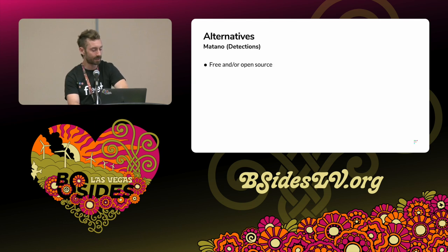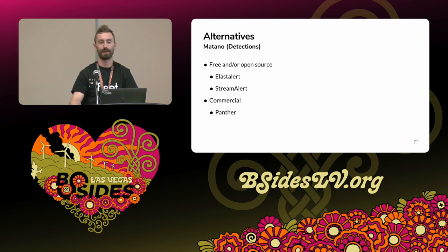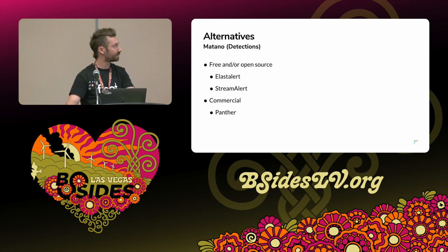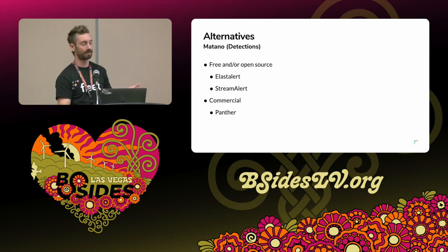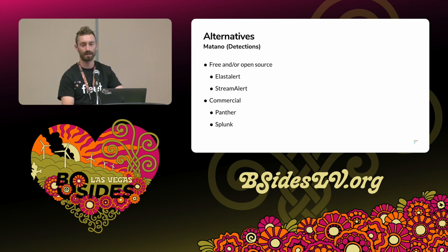And then on the detection side, there are a number of alternatives as well. You could look at projects like ElastAlert or StreamAlert. On the commercial side, a big one these days is Panther, which also really takes the Python detections-as-code approach. I think you don't really have to take what I'm saying here today as dogma — take it as an invitation to build a system that works well for you and your organization.